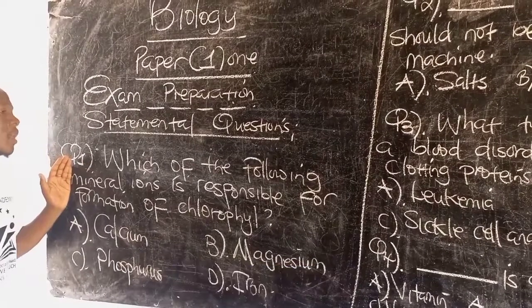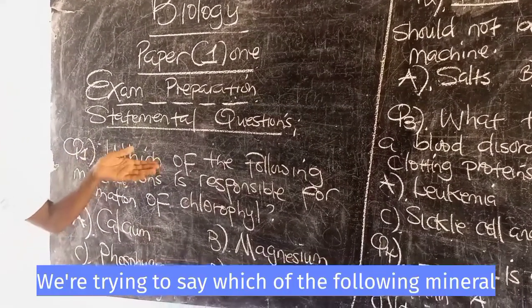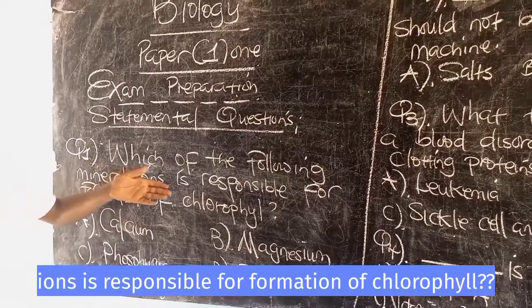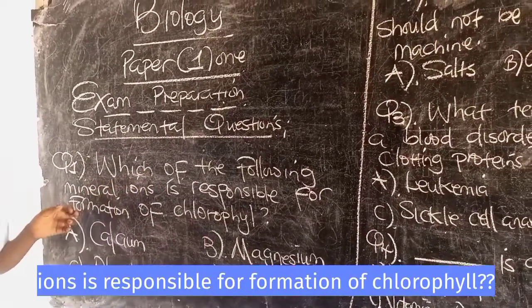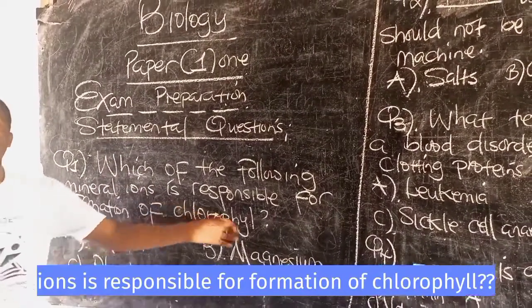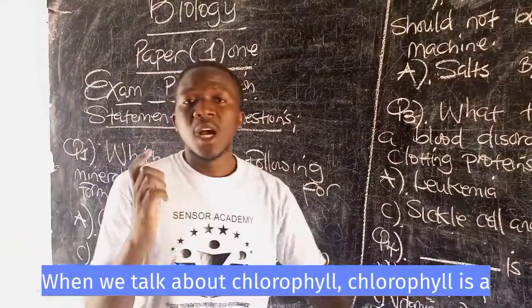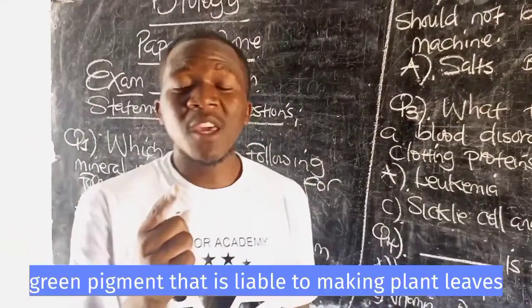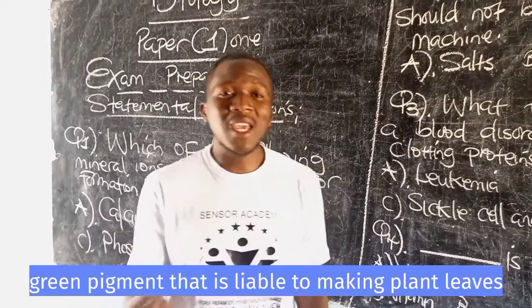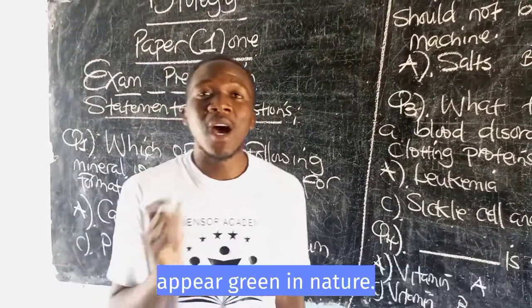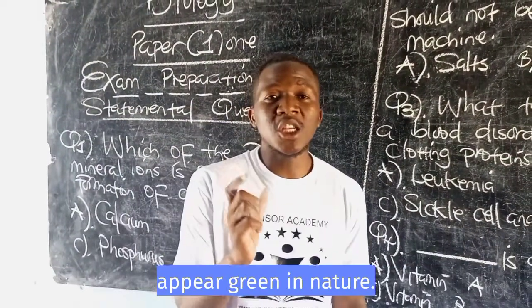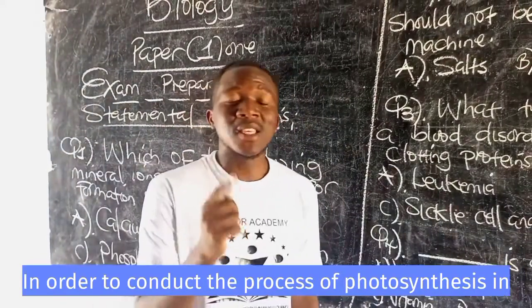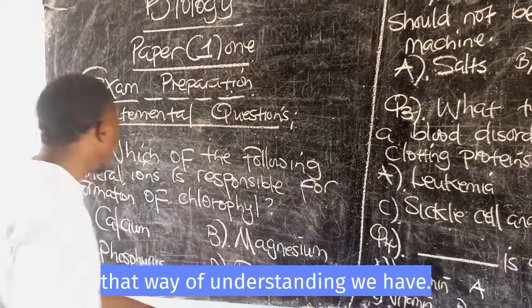For question one, we are trying to say: which of the following mineral ions is responsible for the formation of chlorophyll? When we talk about chlorophyll, chlorophyll is a green pigment responsible for making plant leaves appear green in nature in order to conduct the process of photosynthesis.